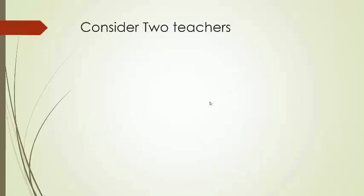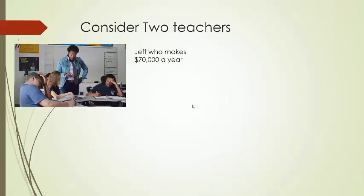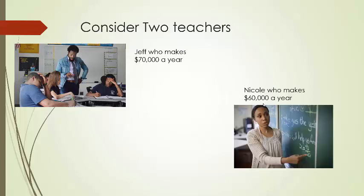Let me set this up with an example. So consider two teachers and what I want to consider is two teachers' salaries. So you have Jeff, and Jeff makes $70,000 a year. And then you have Nicole, who makes $60,000 a year. So who is better off just by looking at their income? You would say, oh, Jeff makes more money, so he's better off based on his income. However, it might not be a fair or direct comparison because there could be some other variables at play here.